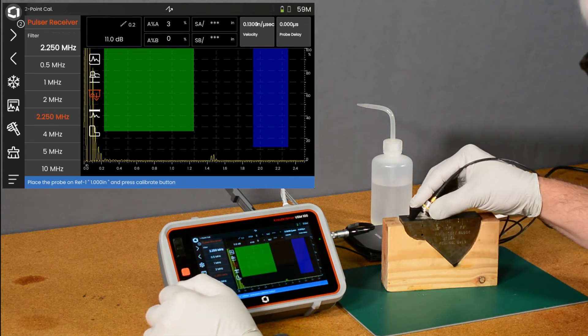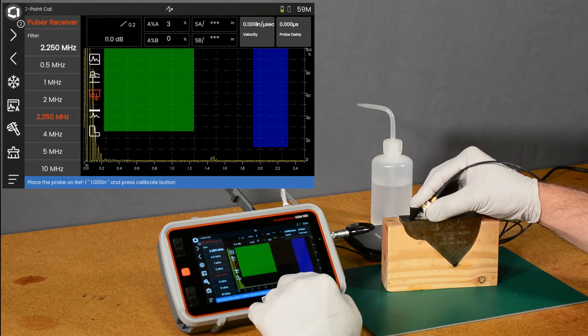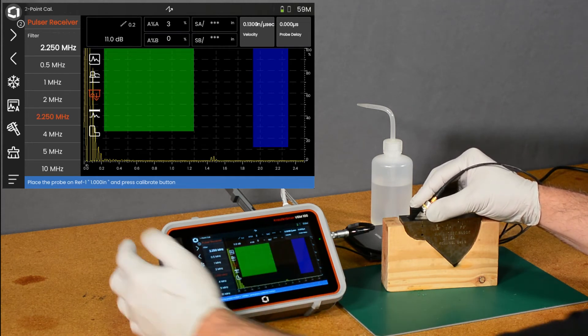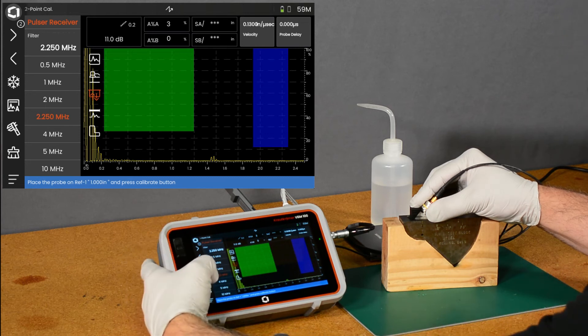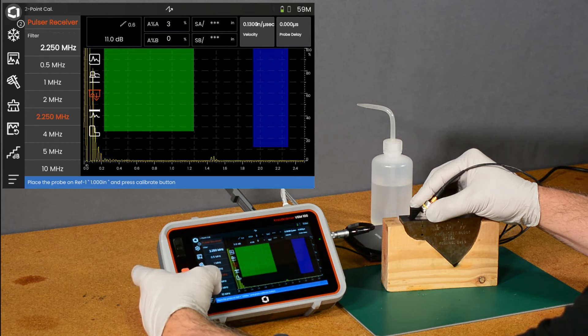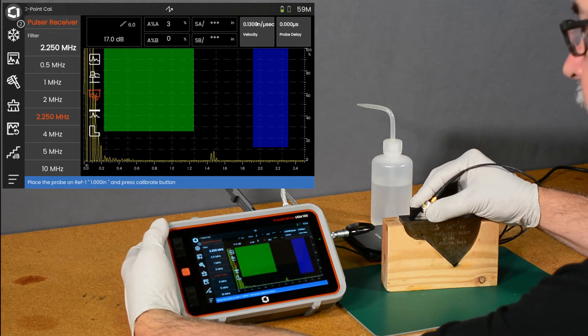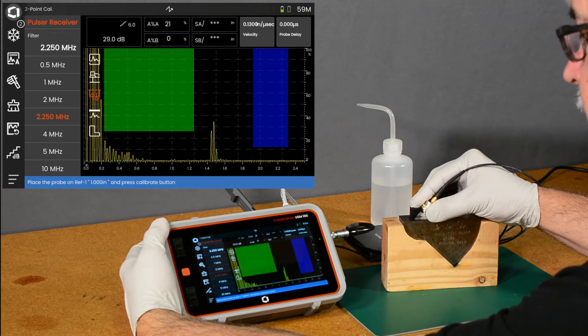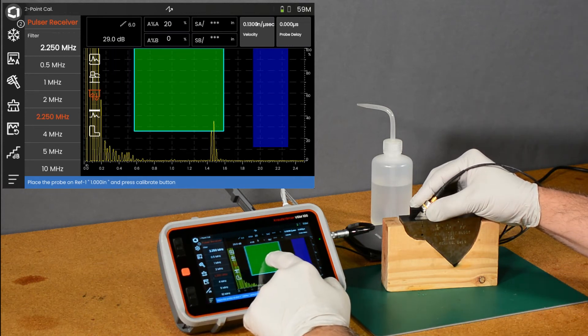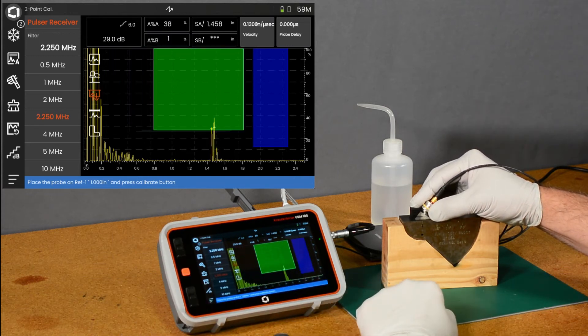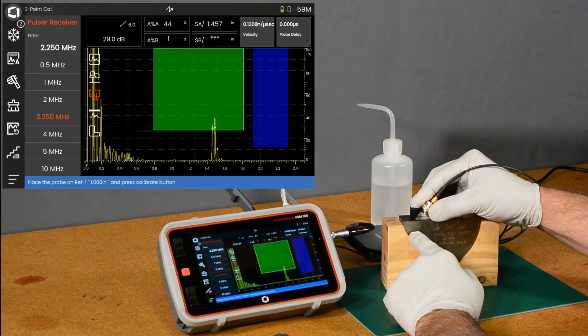And we start to see now our echo from the... Let's take our gain up. Let's change our dB step to some coarser steps. 6 dB steps for now. Give the gain a tap on the back. Okay,